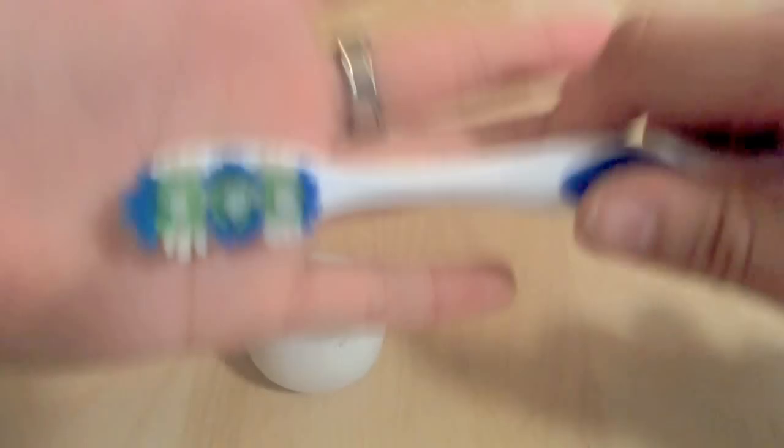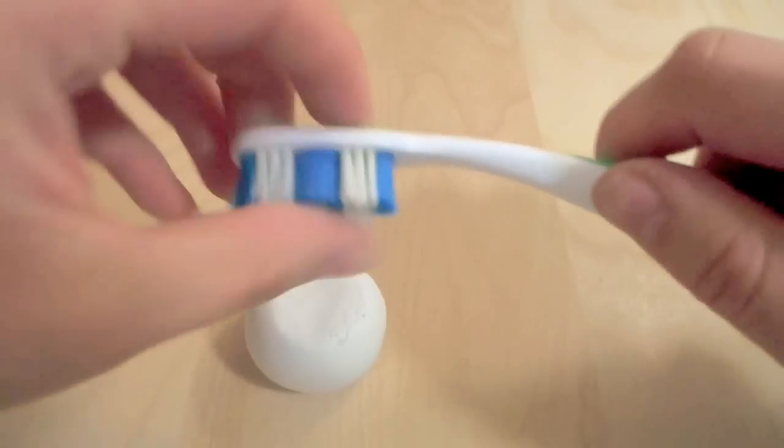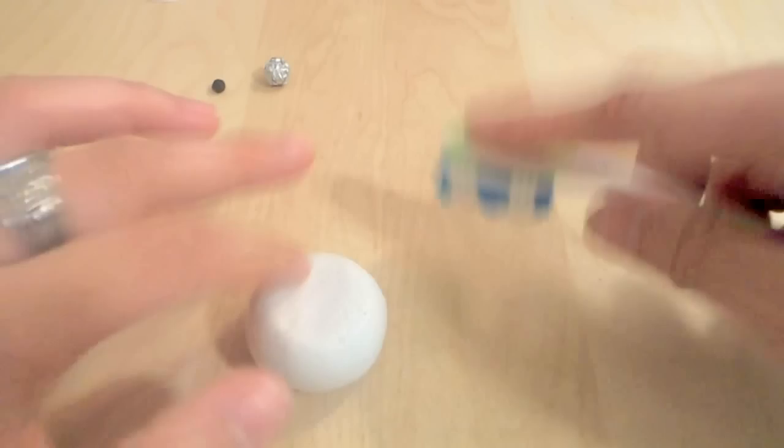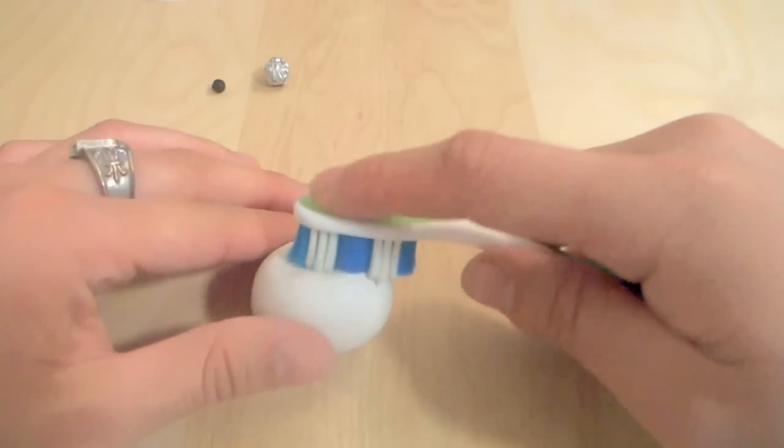Another thing you can use for texturing is a toothbrush and remember you can only use this for polymer clay only. Do not try brushing your teeth with this. That would be very bad. So to texture just press down like so.